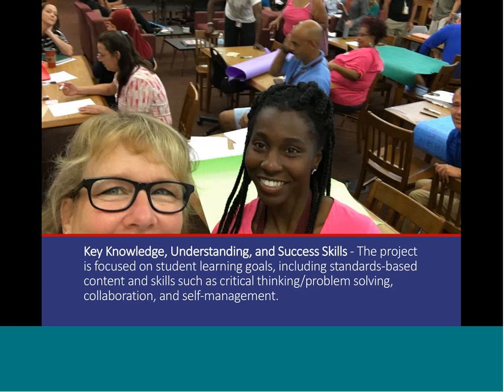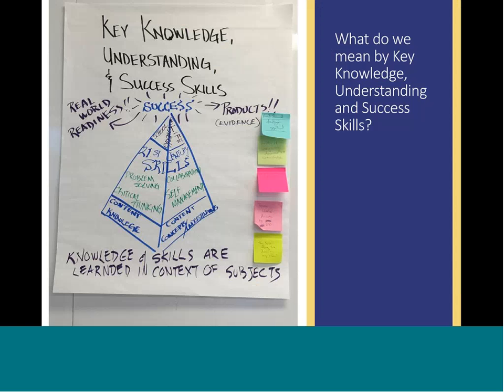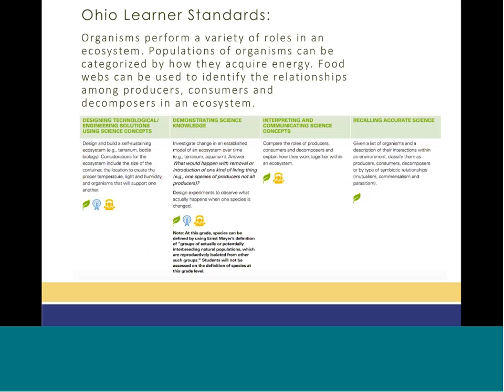When we're talking about key knowledge, understanding, skills, and success skills, we're looking at student learning goals — making sure we focus on those goals in a context that is standards-based, includes critical thinking, and involves a high degree of problem-solving and collaboration. In Ohio, we have Ohio learner standards. An example: organisms perform a variety of roles in an ecosystem; populations of organisms can be categorized by how they acquire energy; food webs can be used to identify relationships among producers, consumers, and decomposers in an ecosystem. Within that there's design and build, demonstrating key scientific knowledge, and so forth.